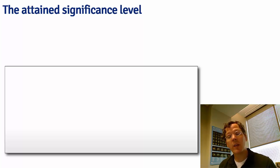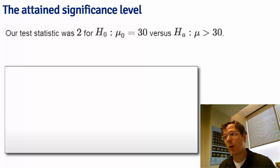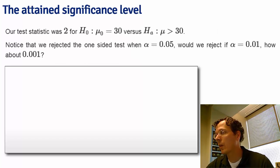There's another way to think about the p-value as the so-called attained significance level. Recall we went through an example where our test statistic was 2 for H0 mu equal to 30 versus mu greater than 30. Test statistics larger than 2 are going to be more supportive of the alternative, where 2 here means that our test statistic was 2 standard errors above the hypothesized mean of 30. Let's assume that our test statistic is standard normal distributed rather than T distributed just to make our discussion a little bit easier.